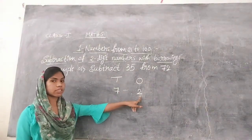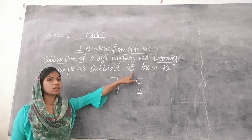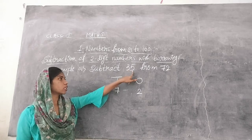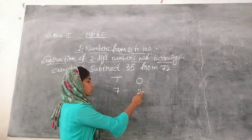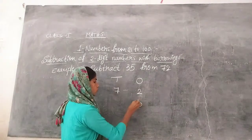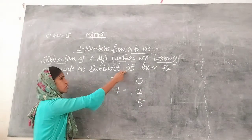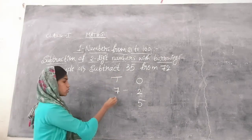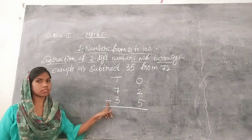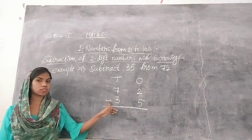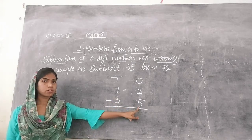Below 72, write the smaller number, which is 35. Five comes in the ones place, so write 5 below the 2. Three comes in the tens place. Put a minus sign — minus shows the subtraction. So 72 minus 35.